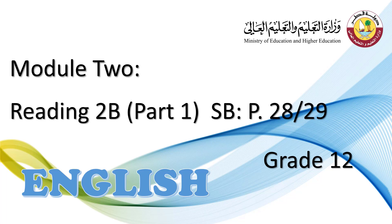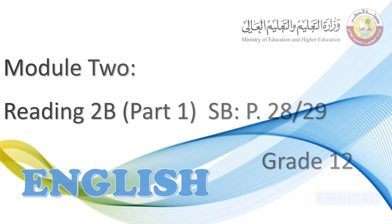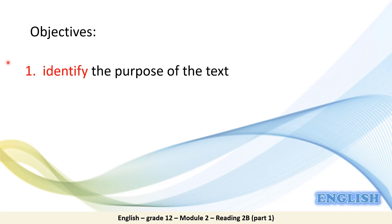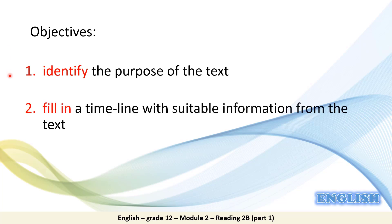Dear grade 12 students, welcome to today's English lesson. This is Reading 2B Part 1. Please make sure to have your books open on pages 28 and 29. There are two main objectives today: the first is identifying the purpose of a text, and the second is filling in a timeline with suitable information from the text.